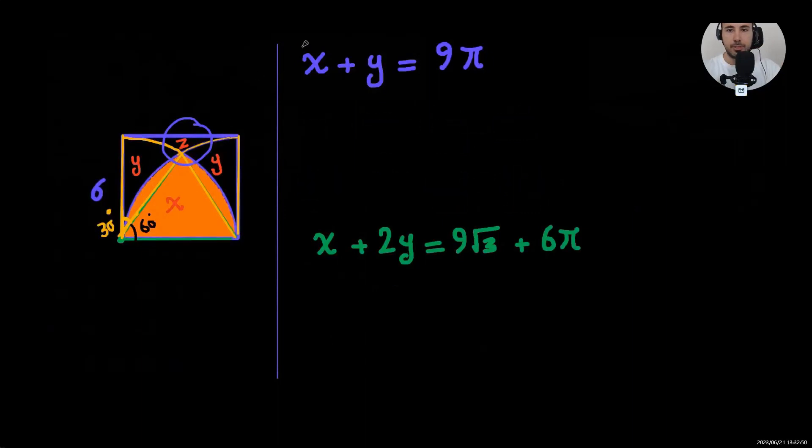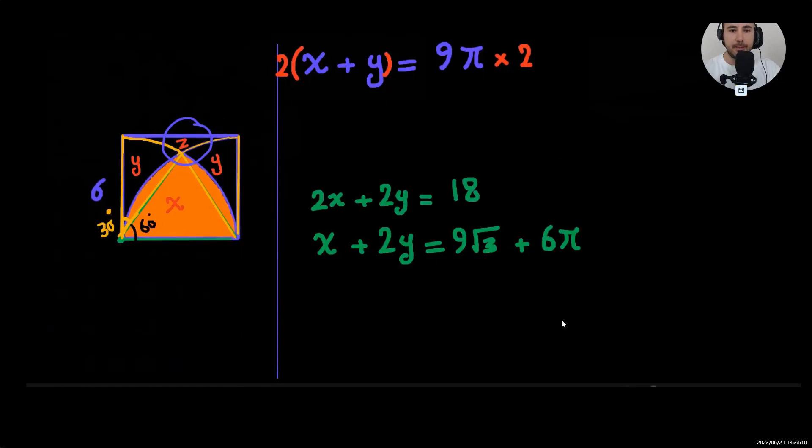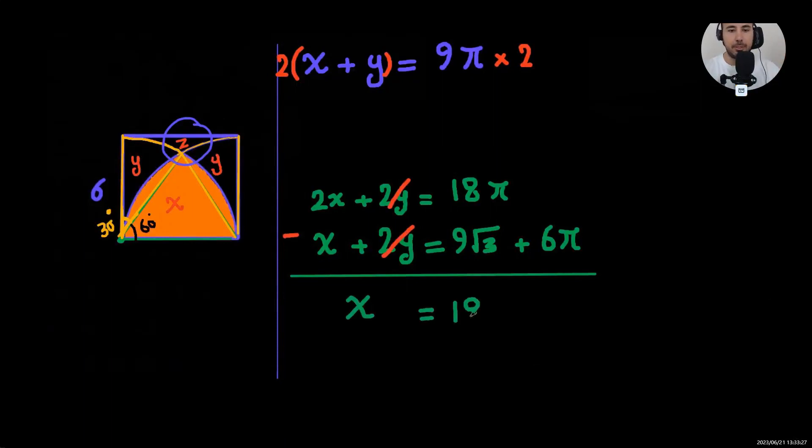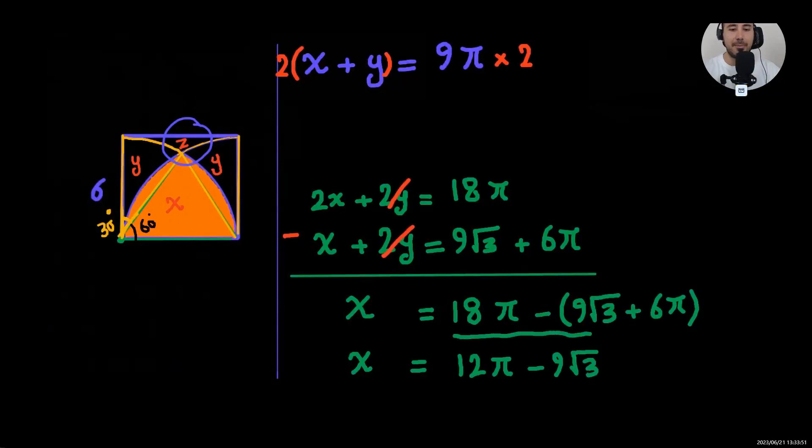So we have two equations with x and y. But here, we want to find the value of x. Remember? So I'm going to multiply this by 2 so that we have 2x plus 2y equals 18 pi. And then if we subtract the two equations, 2y and 2y will cancel. The left-hand side will be 2x minus x, which is x. And then we're going to write all of this. And x equals 18 pi minus 6 pi, which is 12 pi minus 9 times the square root of 3. That's going to be the area of that section, the shaded area. I hope you found it useful.